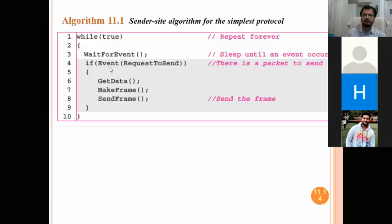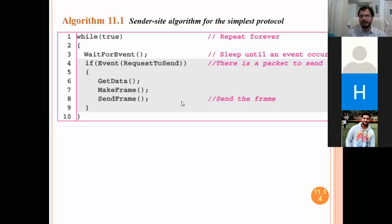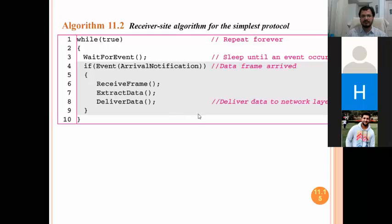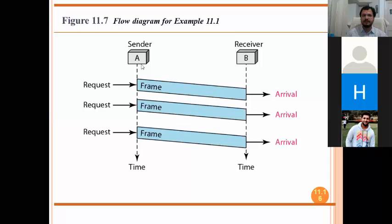In the previous class we talked about waiting for events where we need to send frames — getting data from the network layer, converting it into frames, making headers and tails to distinguish between frames, and then sending them. On the receiving side, upon arrival notification we receive the frame, check the data, and deliver it to the network layer. Flow control here is done between immediately connected hosts.